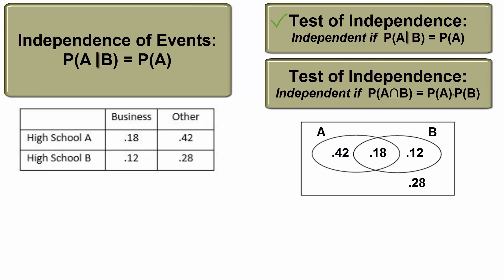And the first test of independence also reveals independence, shrinking the sample space confirms that the conditional probability of declaring a business major given the student is from high school A is equal to the overall probability of declaring a business major. Incidentally, it also works to compare the probability of getting a student from high school A given that the student declared a business major to the original probability of being in high school A. Both are 0.6. You only need to confirm one conditional probability or the other to establish independence.